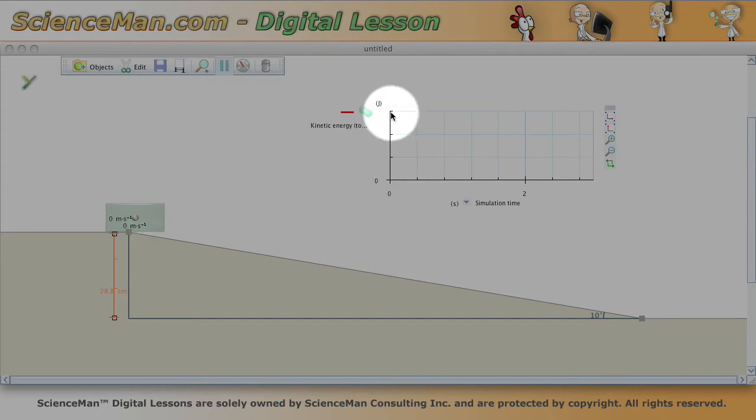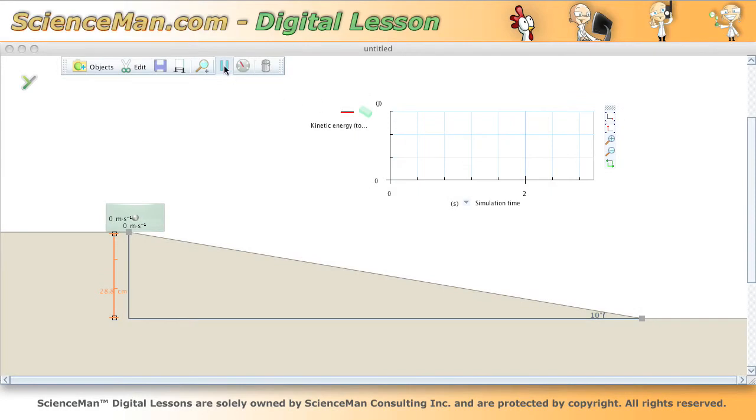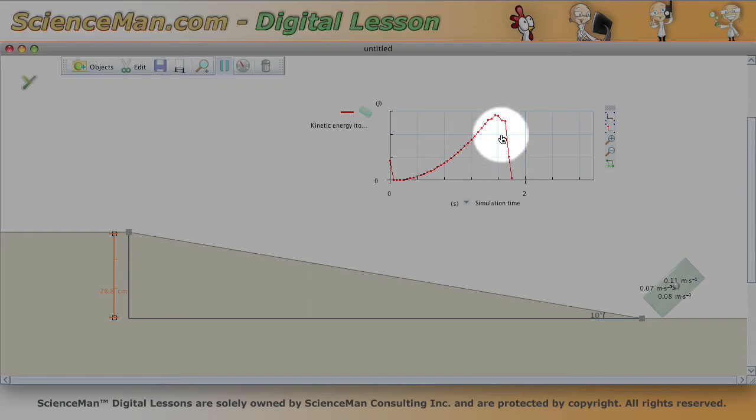So let's release this block at the top of the slope and see how much kinetic energy builds up as the potential energy due to gravity is converted to kinetic energy. You can see if we look carefully at our graph, the kinetic energy reached a maximum of about 2.8 joules.